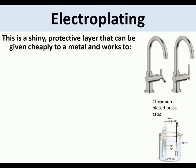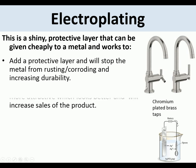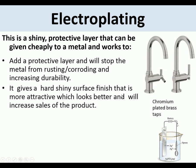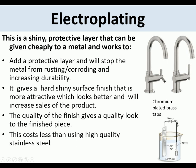Electroplating adds a shiny protective layer cheaply to metal, preventing rusting or corrosion. For example, chromium-plated brass taps: it gives a hard shiny surface finish that is more attractive and will increase sales of the product. The quality of the finish gives a quality look and costs less than using stainless steel. These taps are made from polished brass, chrome plating is applied, and it gives a high quality finish that is easy to clean.